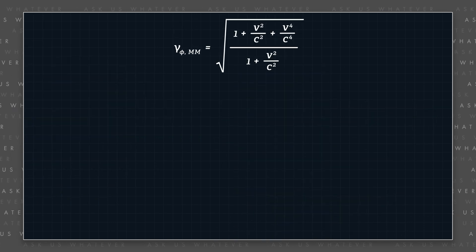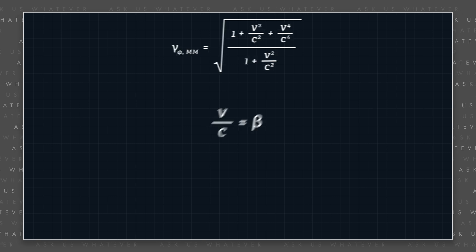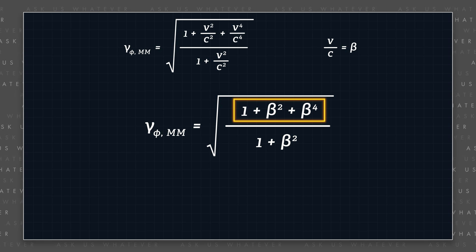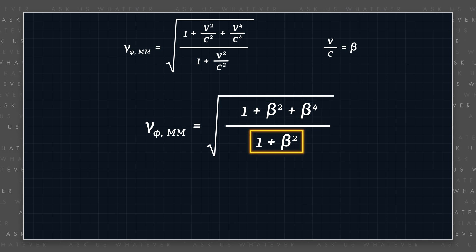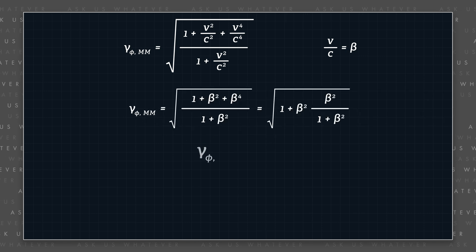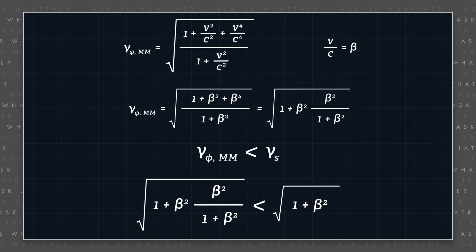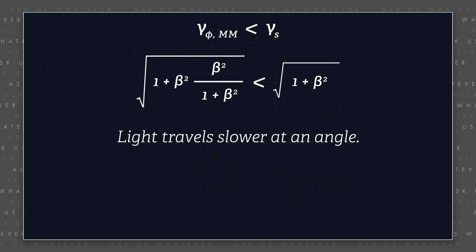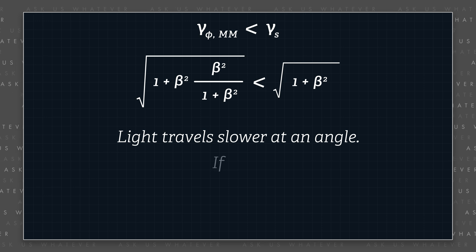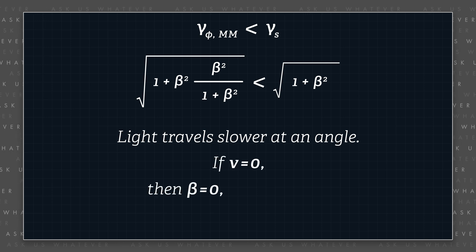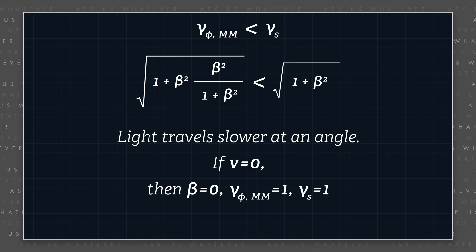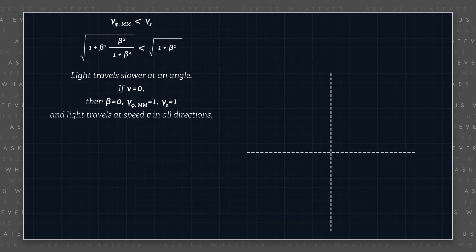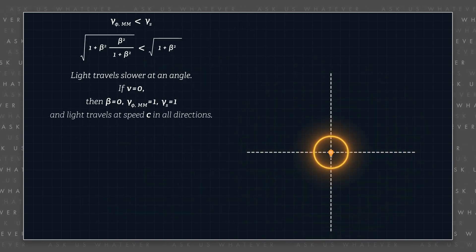If we call the ratio v divided by c beta, then gamma phi can be written as the square root of 1 plus beta squared plus beta to the fourth, all divided by 1 plus beta squared. Note that gamma phi is less than gamma s except for longitudinal motion — light travels less quickly when traveling at an angle with respect to the direction of IRF motion. If the IRF is stationary, beta equals 0, so gamma phi equals 1 and gamma s equals 1, and light travels at speed c in all directions — light speed is isotropic when the source is stationary.